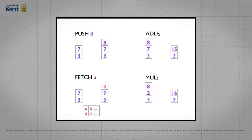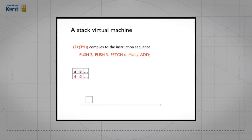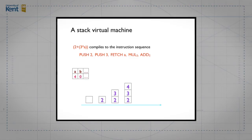Now let's look at a demonstration. We've got the code for a particular expression. The first instruction is push two, which pushes two onto the stack. We then push three. The third instruction fetches variable a, putting the value four on top. A multiplication instruction takes off four and three and replaces them with twelve. Finally, the add instruction takes the remaining two values and replaces them with their sum — leaving a single value on the stack.